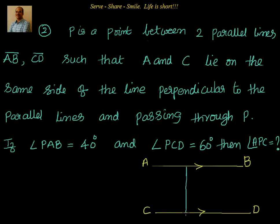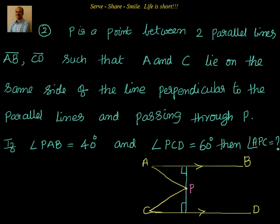There is a perpendicular line, meaning this angle is 90 degrees. That perpendicular line passes through point P. We are told that angle PAB equals 40 degrees, so let's join P to A and also join P to C. We have to find out angle APC.